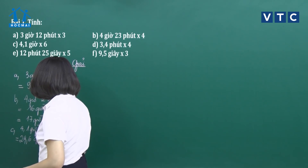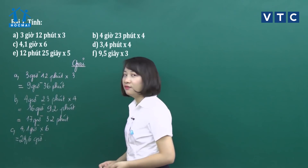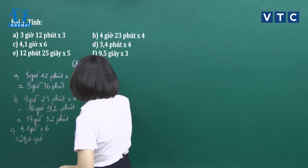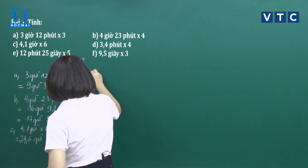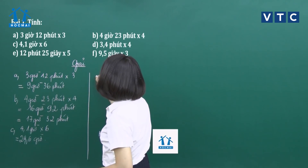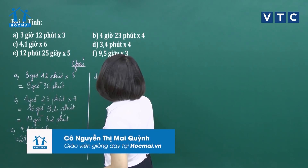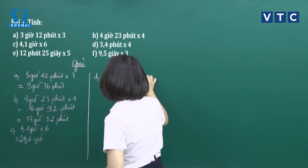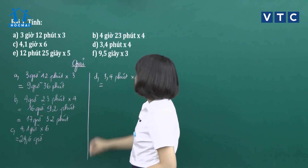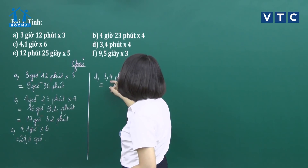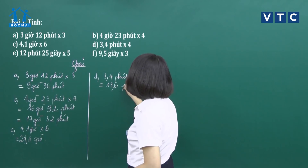24,6 giờ các con có thể đổi sang đơn vị là giờ và phút, hoặc giữ nguyên kết quả. Câu D: 3,4 phút nhân với 4. Thực hiện: 4 nhân 4 bằng 16, viết 6 nhớ 1; 3 nhân 4 là 12, nhớ 1 bằng 13. Kết quả là 13,6 phút.